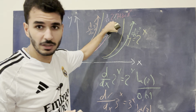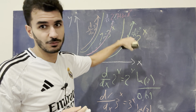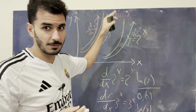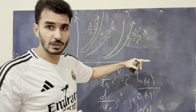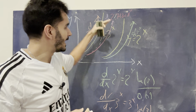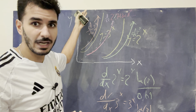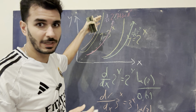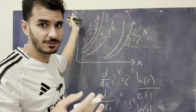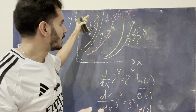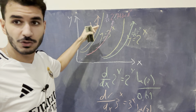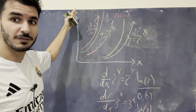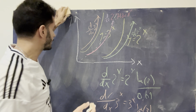Anything lower than 2.718... and the derivative is going to be lower than the function. Anything higher than that value — like 3, 4, 5, 6, 7, 8 — the derivative is going to be growing faster than the function itself.